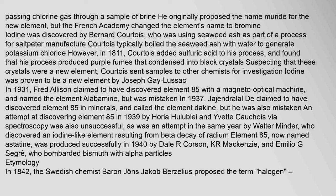An attempt at discovering element 85 in 1939 by Horia Hulubei and Yvette Cauchois via spectroscopy was also unsuccessful, as was an attempt in the same year by Walter Minder, who discovered an iodine-like element resulting from beta decay of radium. Element 85, now named astatine, was produced successfully in 1940 by Dale R. Corson, K. R. MacKenzie, and Emilio G. Segrè, who bombarded bismuth with alpha particles.